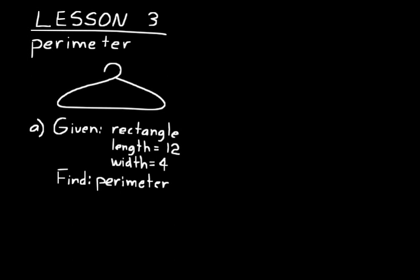Here's a practice problem to understand what perimeter is. You've been given a rectangle — remember from lesson two, a rectangle has two pairs of parallel sides, all right angles, and those pairs are not necessarily equal to each other. This rectangle has a length of twelve and a width of four. A good thing to do is make a picture, labeling all the sides: both widths are four, and both lengths are twelve.